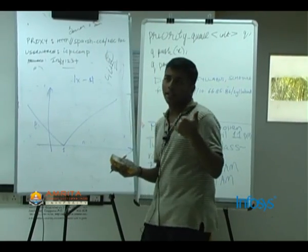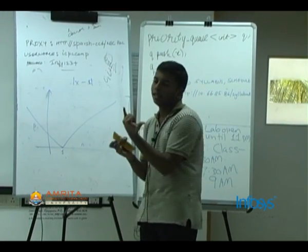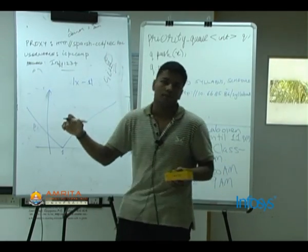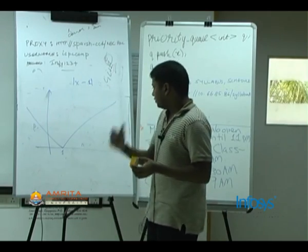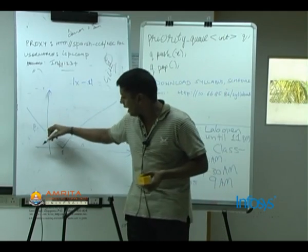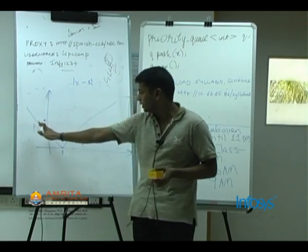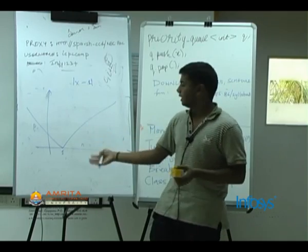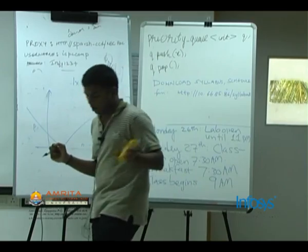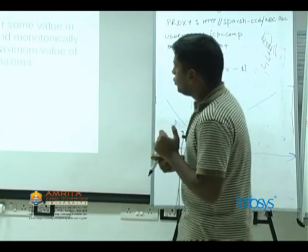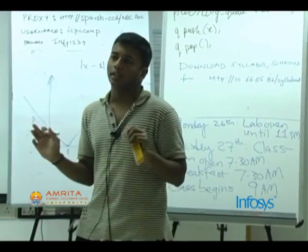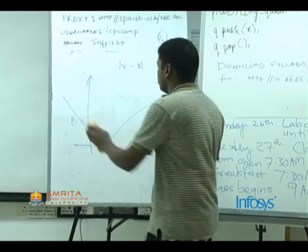A unimodal function is strictly decreasing until some constant m and then strictly increasing, or the other way: strictly increasing until m and then strictly decreasing. The objective of ternary search is: given a unimodal function — which may not even be continuous — find its minimum or maximum.